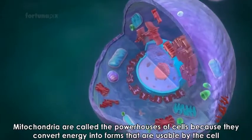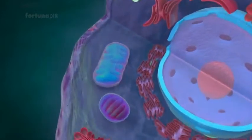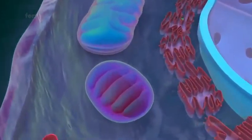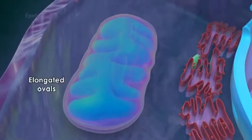Mitochondria vary in shape from almost spherical to elongated ovals.